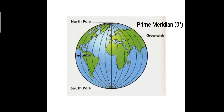The prime meridian passing through Greenwich is at the centre, dividing the earth into eastern and western hemispheres with a value of 0. As we move towards the poles the distance between the longitudes decreases, and as a result all the meridians meet at one point — the north pole and south pole.